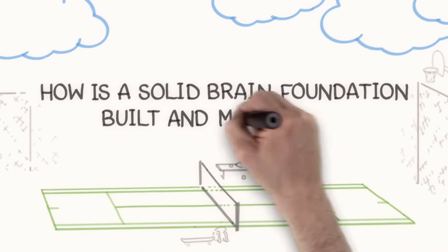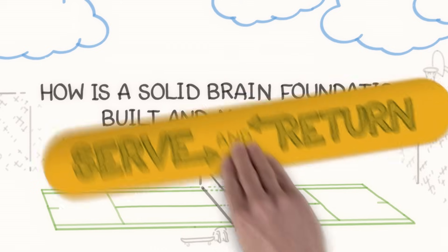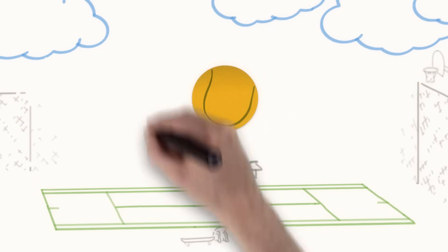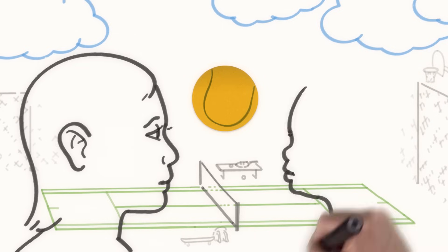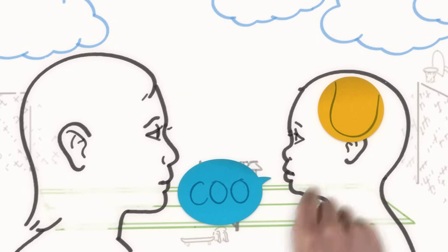So just how is a solid brain foundation built and maintained in a developing child? One way is through what brain experts call serve and return interactions. Imagine a tennis match between a caregiver and a child, but instead of hitting a ball back and forth across a net, various forms of communication pass between the two.